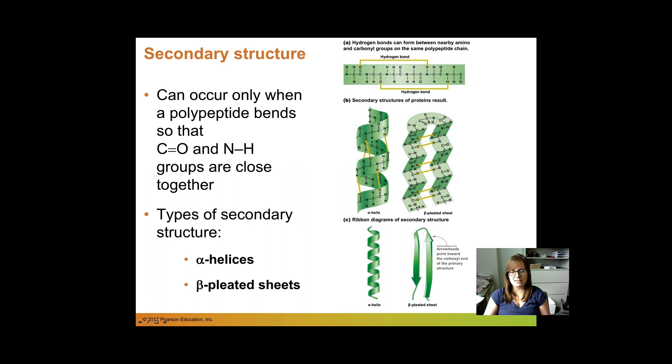Or we can get these beta pleated sheets in which the protein kind of folds over and they bond diagonally between the sheets. And we represent that by these arrowheads to kind of point to the direction that we're going. So this is secondary structure. It's really dictated by hydrogen bonds in the backbone.